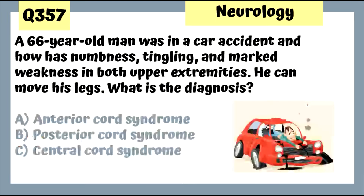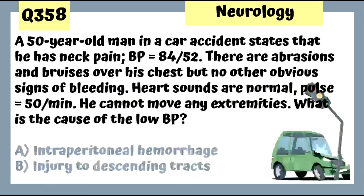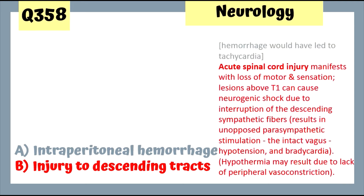Question 357: A 60-year-old man in a car accident has numbness, tingling, and marked weakness in both upper extremities but can move his legs — central cord syndrome, associated with hyperextension injuries. Question 358: A 50-year-old man in a car accident has neck pain, low blood pressure, abrasions, bradycardia (pulse 50), and cannot move any extremities — the cause of low blood pressure is injury to the descending tracts. An acute spinal injury leads to neurogenic shock due to interruption of descending sympathetic fibers, causing unopposed parasympathetic stimulation.